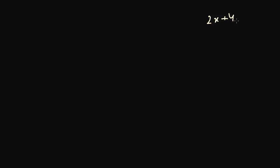An equation is simply a relationship between an unknown quantity and a known quantity. If someone says pick a number, suppose the number is x, and you're asked to multiply 2 with the number, and then add 4 to it, and you say you got 10, then we can simply solve this equation. We get 10 minus 4, which is 6, divided by 2, so the number was 3.